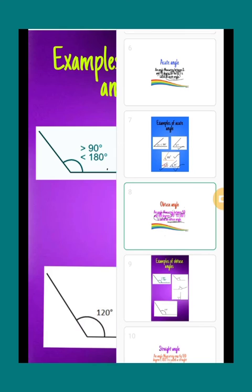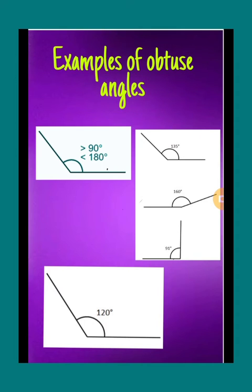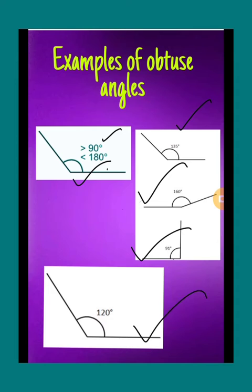Here are some examples of obtuse angles which are greater than 90 and less than 180 degree. Examples are 135 degree, 160 degree, 91 degree, and 120 degree. These are the examples of obtuse angles.